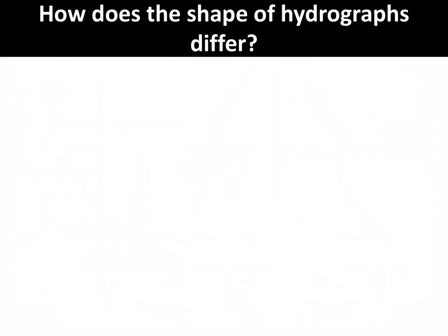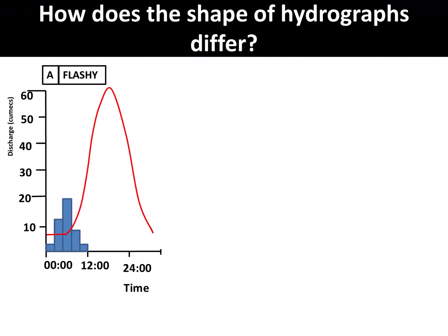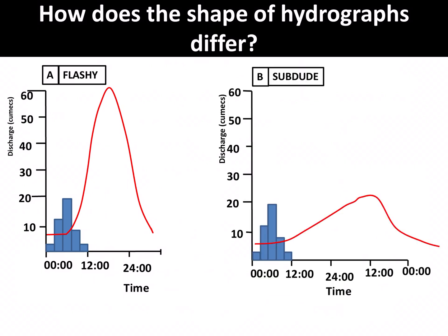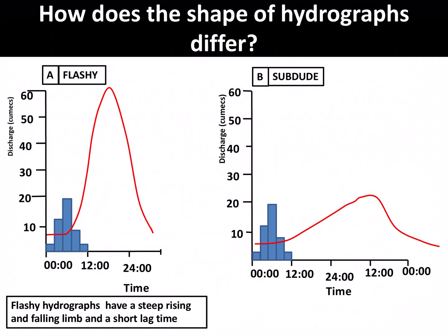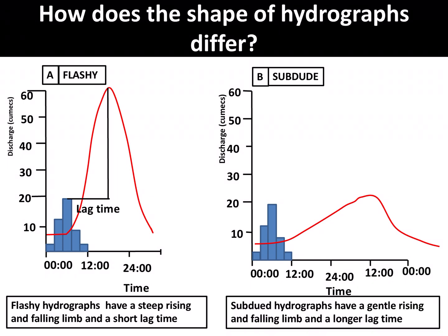Hydrographs can look different depending on the characteristics of the drainage basin. The main two types are flashy and subdued. Flashy hydrographs have a steep rising and falling limb and a short lag time, whereas subdued hydrographs have a gentle rising and falling limb and a longer lag time. Next week, we will look at how different drainage basin characteristics change the shape of the hydrograph.